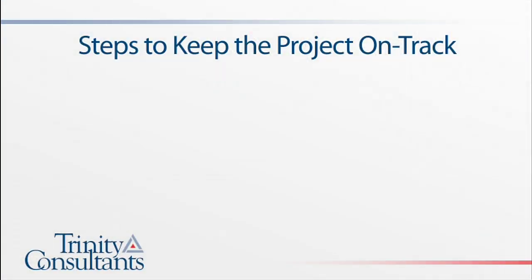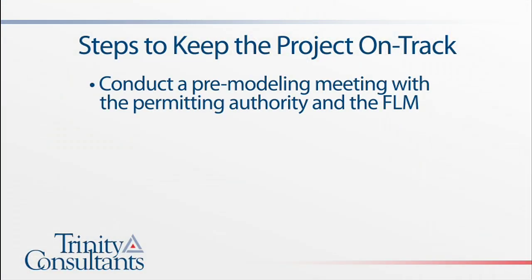Trinity recommends several important steps to keep the project on track and minimize unexpected stumbling blocks. First, once the applicant has determined that Class 1 modeling is required, a pre-modeling discussion or meeting should be conducted with the appropriate permitting authority and the FLM affected by the project. This will facilitate early discussion of any concerns, such as emission rate averaging times, emission speciation, and whether to use the EPA-specified CALMET parameters or specific FLM or State Agency parameters.